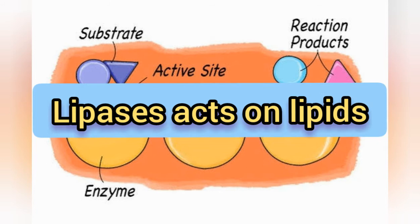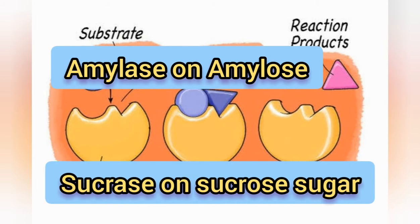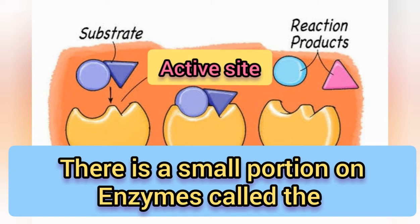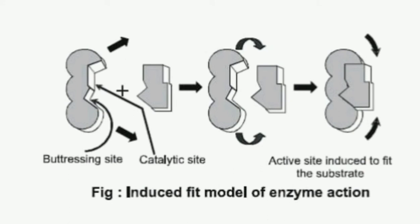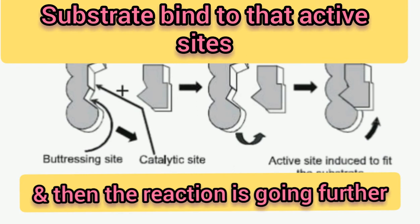Lipases act on lipids — that is the specificity. Similarly, amylase acts on amylose, and sucrase acts on sucrose sugar. There is a small portion on the enzyme known as the active site. The substrate recognizes and binds to that active site, and then the reaction proceeds further.